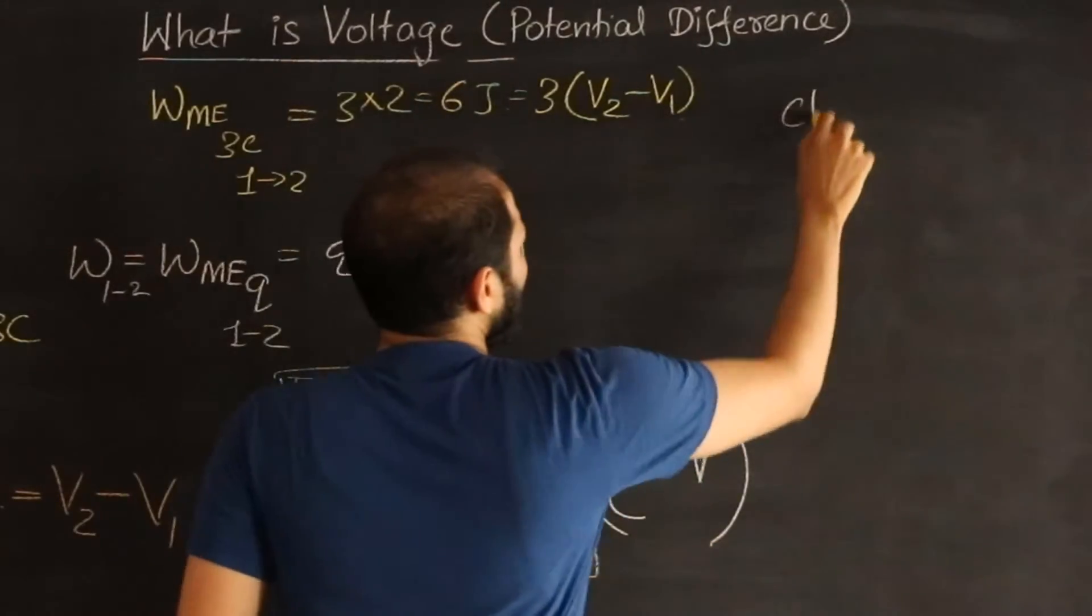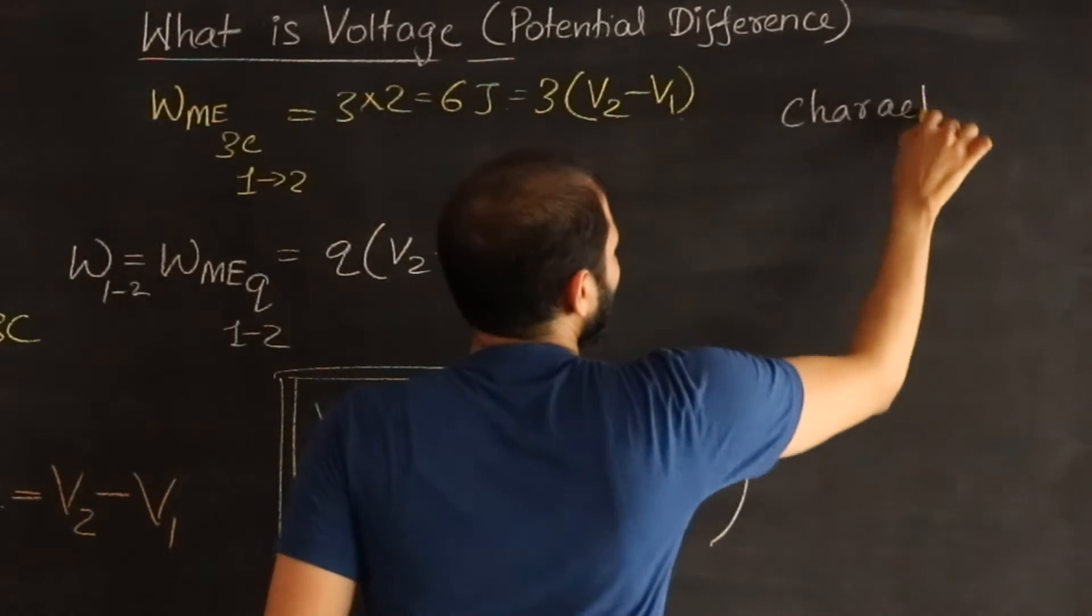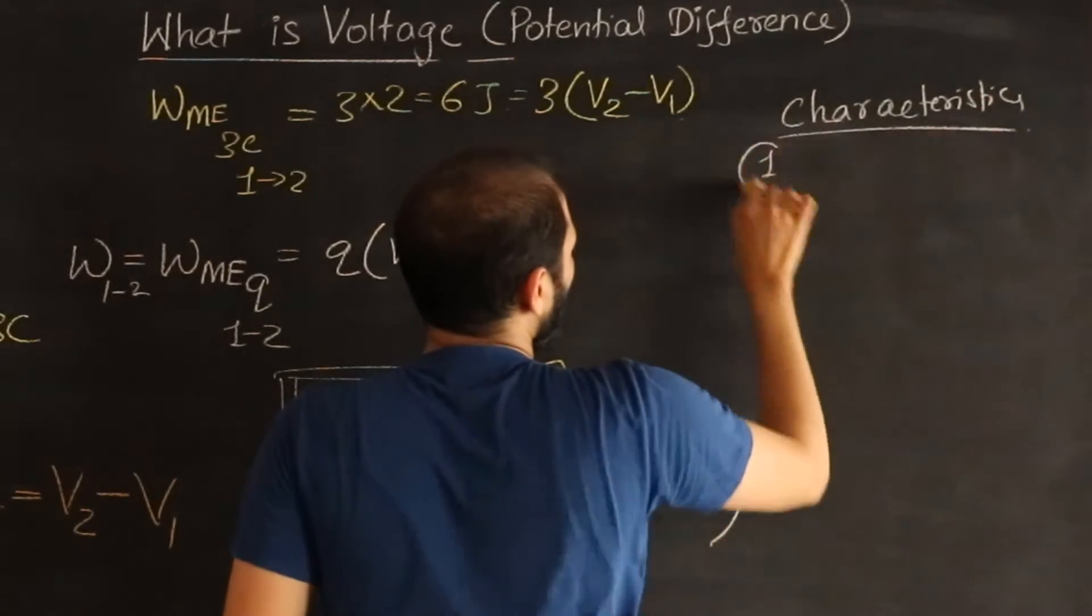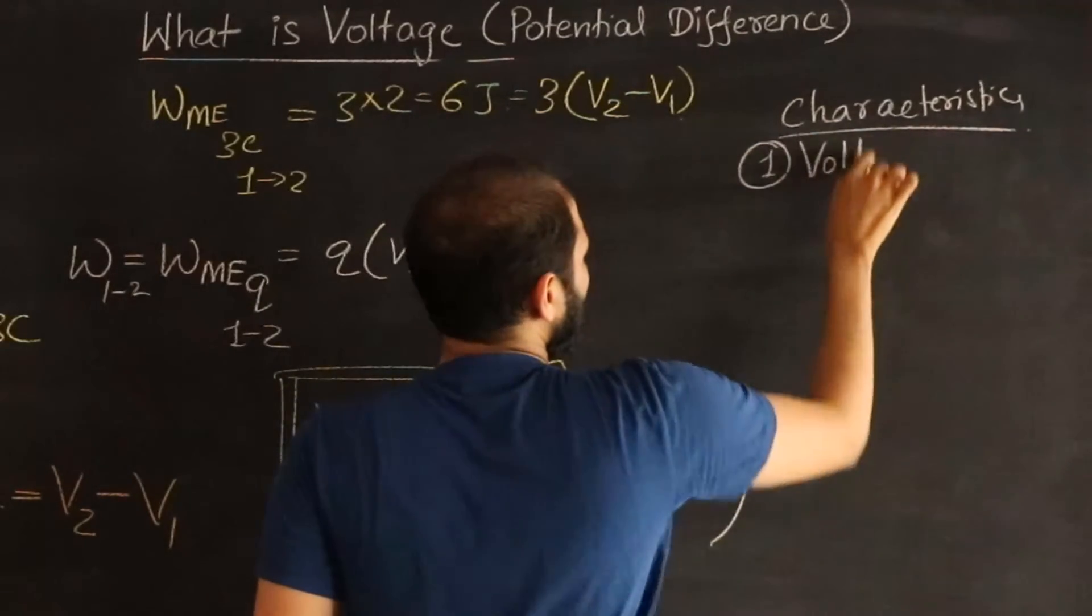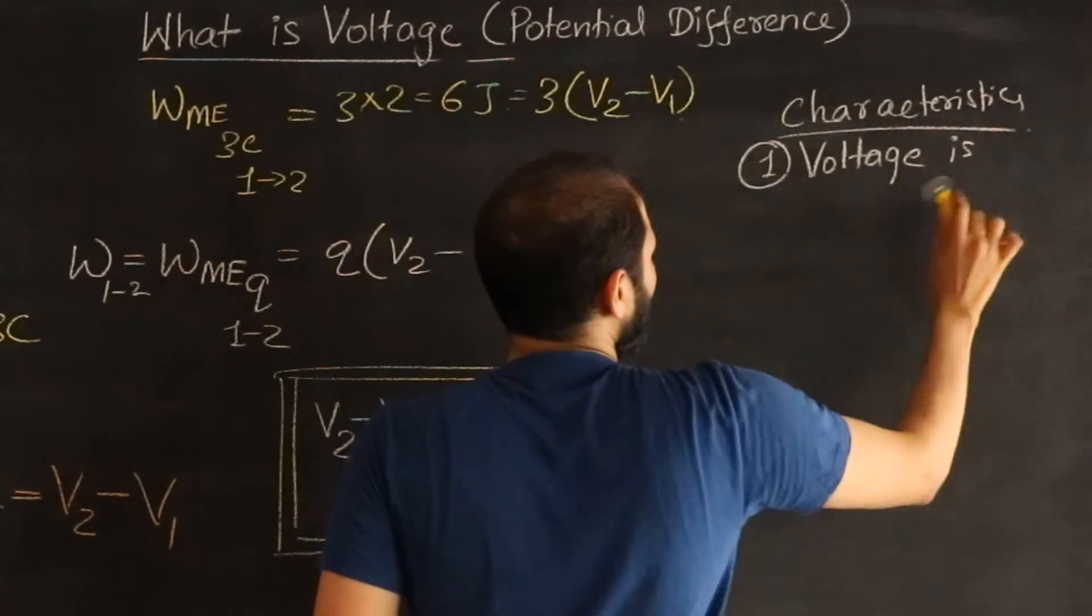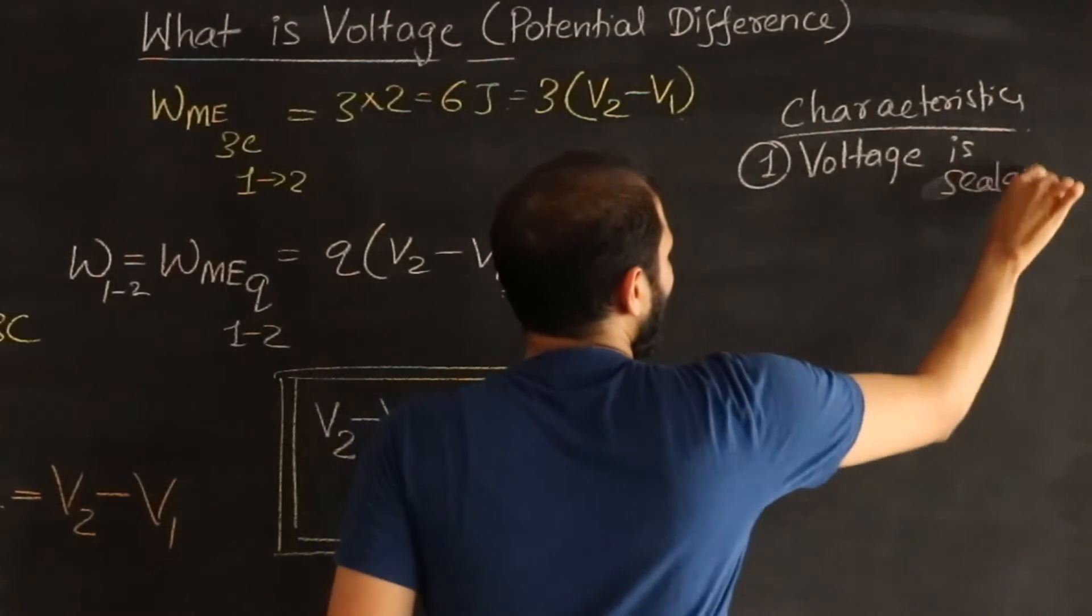Yeah, okay. So let's write characteristics. One, voltage or PD or potential difference is scalar. Okay.